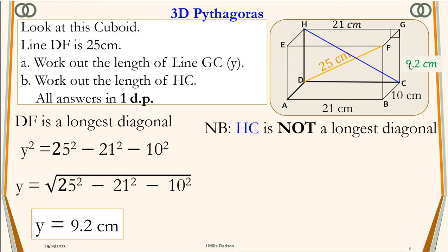So we put 9.2 in place of y, and 21 cm is the same as 21 cm up there. If you look at HC, it's not the longest diagonal because we can make a perfect right angle triangle.